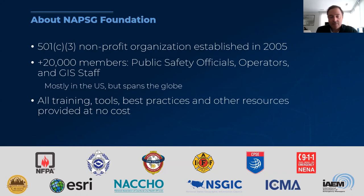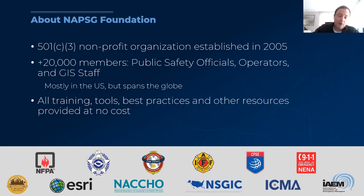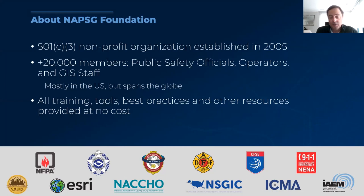What we do as a 501(c)(3) is really focus on training, tools, and best practices — and most importantly, we don't charge for those. None of the trainings, tools, or best practices we provide have a cost. That's primarily because we don't want to charge people who respond to events a penny for anything. We also find that private sector folks can make use of these tools to better serve the public safety community. The organizations you see on the slide helped create NAPSIG Foundation — all primarily public safety organizations, with ESRI being fundamental in helping create us.